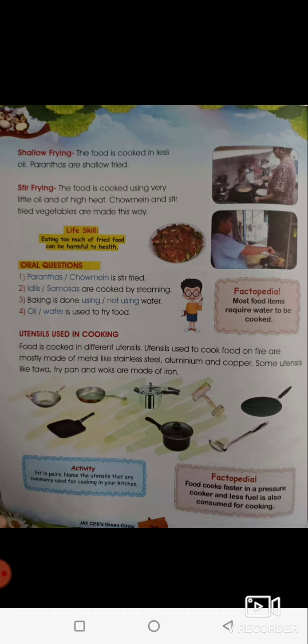Next, we will learn about utensils used in cooking. There are many vessels we use in the kitchen, and they are called utensils. Some of you sent me videos of your food preparation and used many utensils. Utensils used to cook food on fire are mostly made of metal like stainless steel, aluminium, and copper.